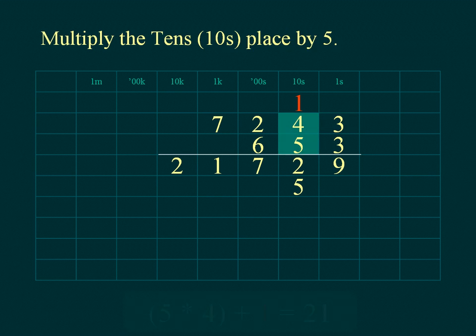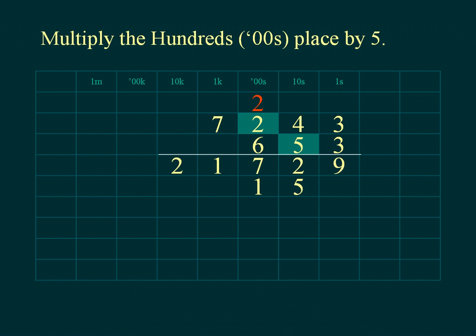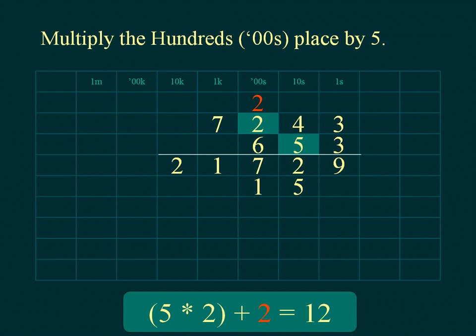Multiply the tens of the multiplicand; add the tens carried from the units place. Place the units of the result below the line in the hundreds place and place the tens of the result under the tens place. Multiply the hundreds of the multiplicand and place the tens of the result under the thousands place.